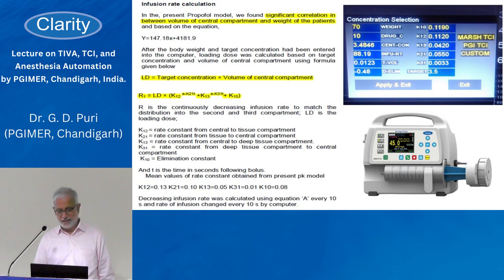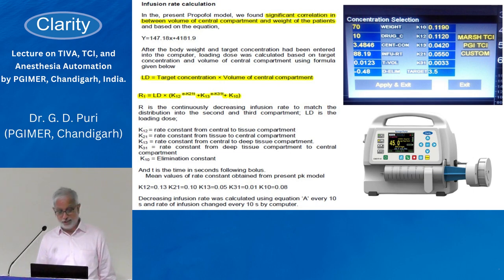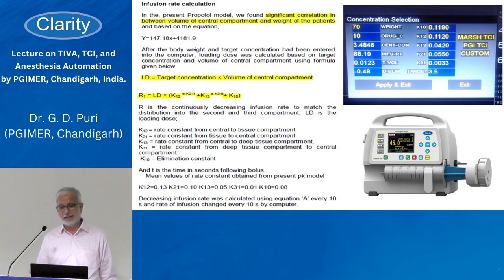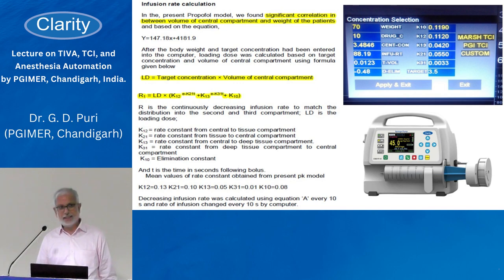When you have these constants and volume parameters, you can calculate the loading dose: target concentration multiplied by the central volume of distribution. For a 60 kg patient, the central volume of distribution is about 12.5 liters, and if you want 3 micrograms per ml, multiplying gives approximately 35–36 mg of propofol. That's why sometimes people wonder why you are giving only a small dose.